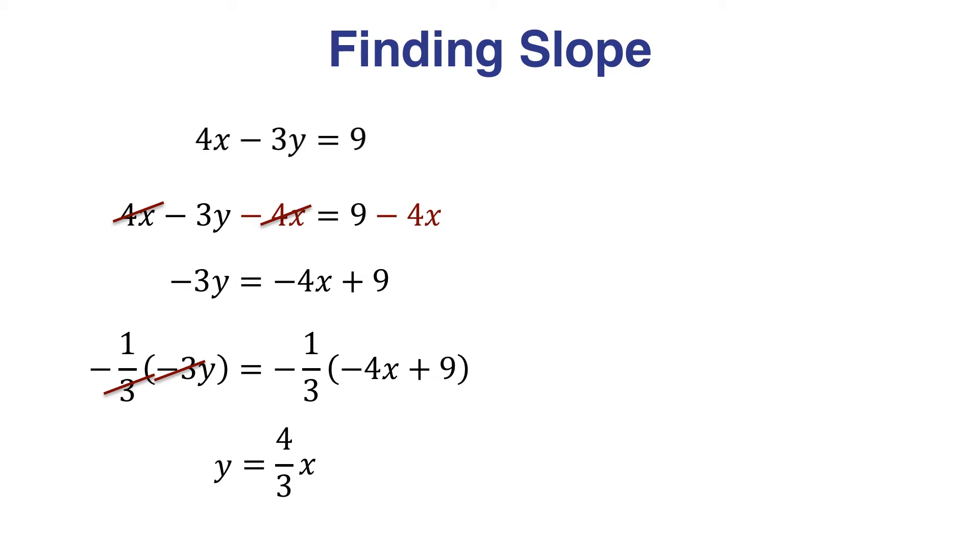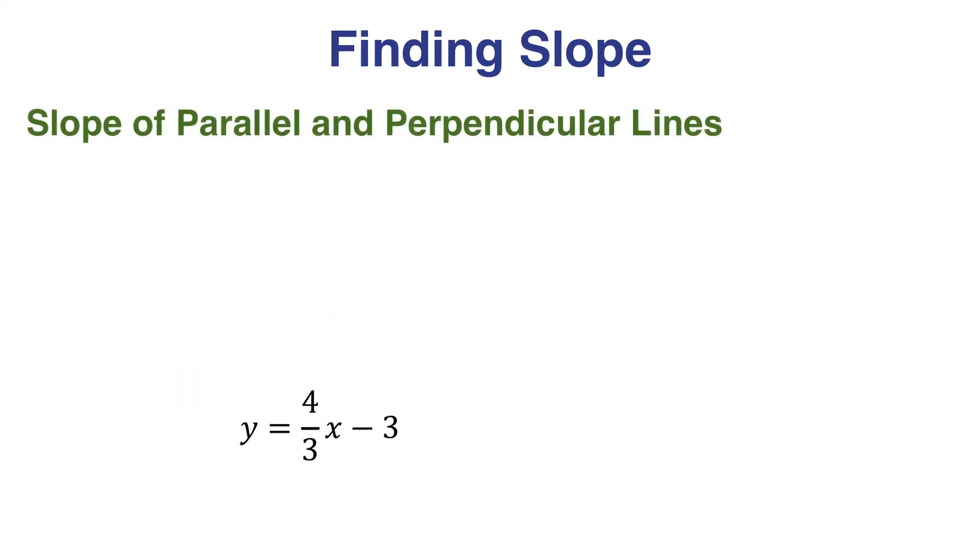Negative times positive is negative, so minus, then 1 third times 9 is just 3. So our final answer is y equals 4 thirds x minus 3.